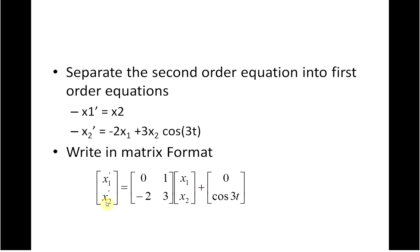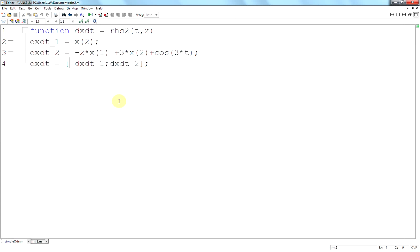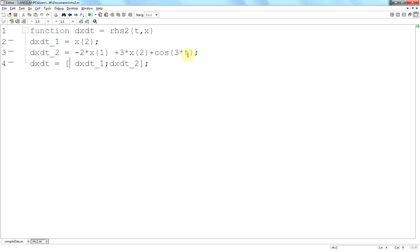Minus 2x1 plus 3x2 equals cos 3t. And I've written it there. Hopefully, that's clear enough.